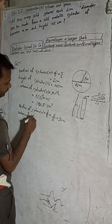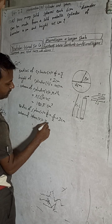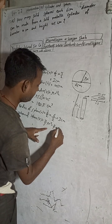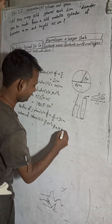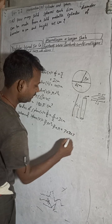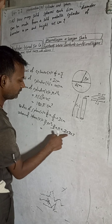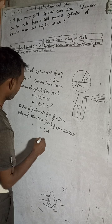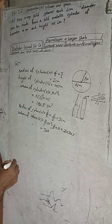Volume of a sphere = 4/3 × π × r³. Here r = 3, so r³ = 3 × 3 × 3 = 27. So volume = 4/3 × π × 27 = 36π cm³.